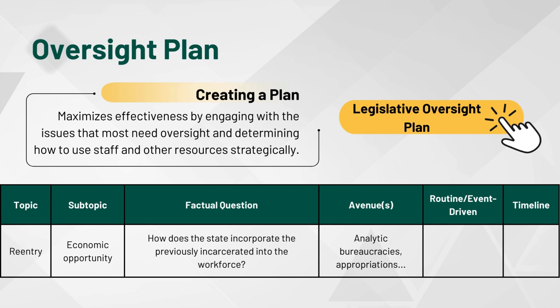Now, is the impetus for this row of my oversight plan something that has been a chronic problem in my state? Or was it inspired by a recent terrible news article about how impossible it is for the previously incarcerated to find jobs? Both approaches change what resources to use throughout the inquiry. Lastly, can I answer this question in a week? Do I want a quarterly report? How long do I wish to conduct oversight on this question? Once answered, one block of the oversight plan is finished and I can move on to the next topic.